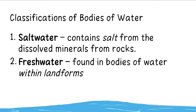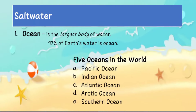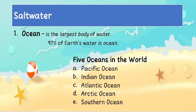Classifications of bodies of water: salt water contains salt from the dissolved minerals from rocks. Fresh water is found in bodies of water within landforms. Salt water — ocean is the largest body of water; 77 percent of earth's water is ocean.